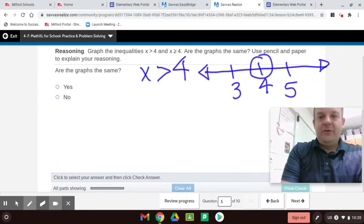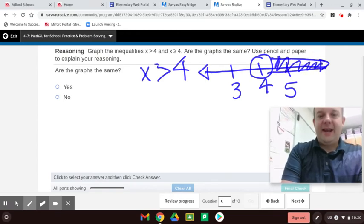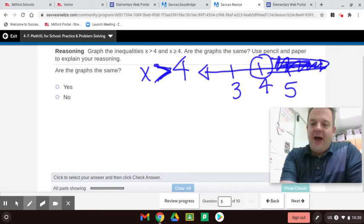And this will be an open circle, and it's X is greater than 4. So, it's shading this way. And you kind of see how this arrow, it looks like an arrow. The arrow points to the direction that it shades, which is kind of a neat trick, a little hack for you.